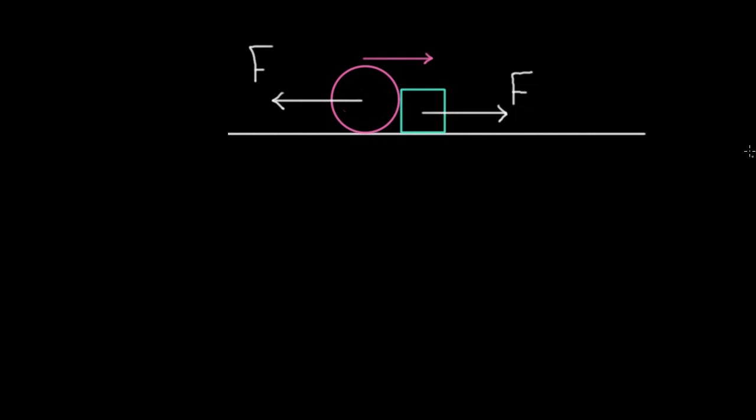So the green cube's gonna gain some momentum, but the pink ball's gonna lose some momentum, and here's the cool thing. Whatever momentum is gained by this green cube has to be the same amount of momentum that's lost by the pink ball.